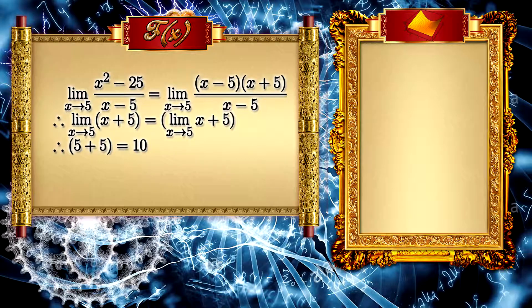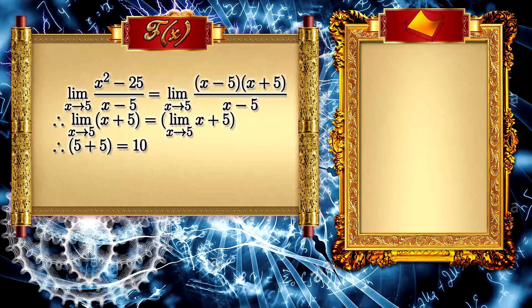Now it is simple because the limit of x + 5 when x tends to 5 is only putting x with the value of 5, and we have the value of 10.